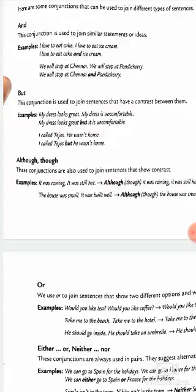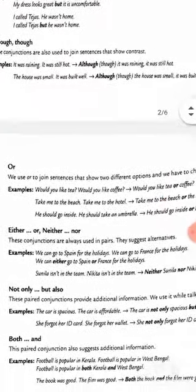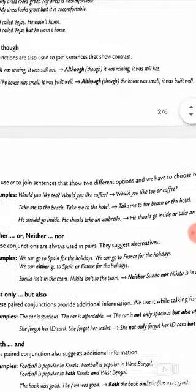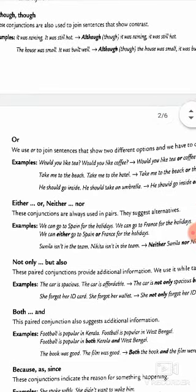Or is used to join sentences that show two different options and you have to choose one. Would you like tea or coffee? You have two options to choose from: tea or coffee.